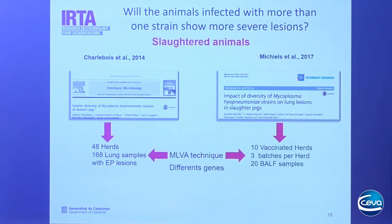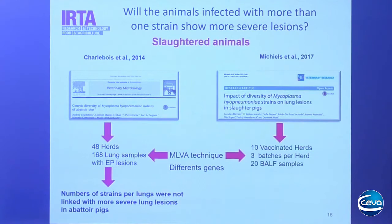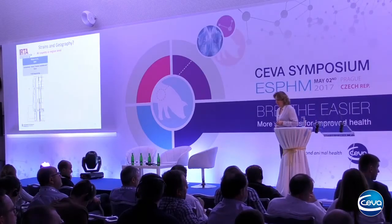Another unanswered question from this study is whether animals harboring more than one strain show higher or more severe lung lesions. Two different studies investigated which strains are found at the slaughterhouse level. The first was done in Canada in 2014, testing 168 lungs showing enzootic pneumonia-like lesions from 48 herds. The other took nasal swab samples from three different batches of 10 vaccinated herds, using the same technique. The first study concluded that the number of strains per lung was not linked to more severe lung lesions.